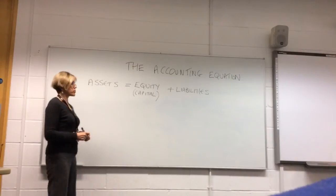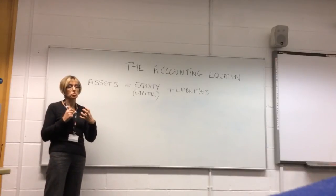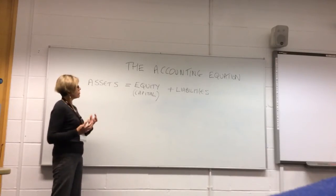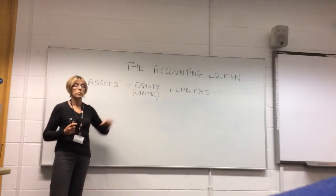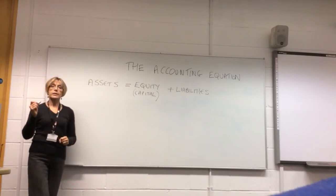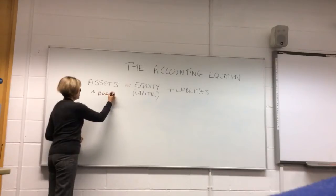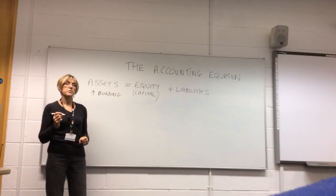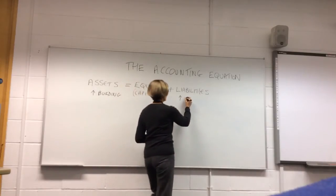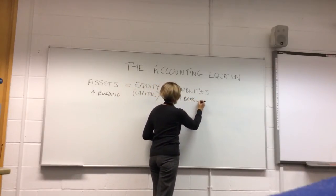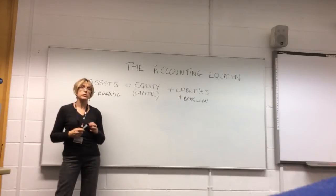When we're recording transactions in our bookkeeping, we have to make sure that assets remain equal to equity or capital plus liabilities. For example, if we buy an asset such as a building, our assets go up. And if we finance that purchase with a bank loan, our liabilities also go up by an equal amount. This accounting equation underpins the production of financial statements and the double entry bookkeeping we'll do later in the module.